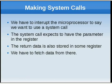So to make a system call, first what we do is that we interrupt the microprocessor to say that we want to use a system call. Now just like in traditional functions in C, C++, and Java, we put parameters inside some brackets — but this is not the case in assembly.